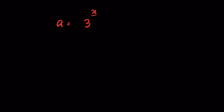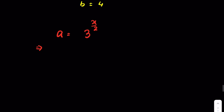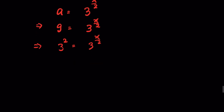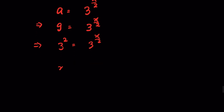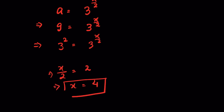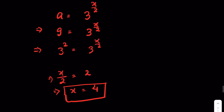So 9 = 3^(x/2). We can write 9 as 3², so 3² = 3^(x/2). Since both bases are the same, x/2 = 2, therefore x = 4. So x = 4 is the value of x.